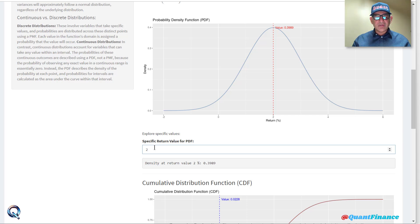I have made adjustments to the default values and we are calculating specific return value for PDF at two. First we are doing PDF and then we will of course do CDF as well.